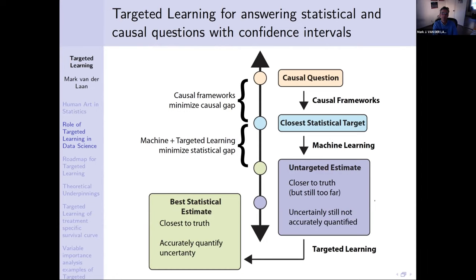Statisticians have thought about this and came up with assumptions such as coarsening at random, missing at random, and the sequential randomization assumption. That gives us fundamental theorems which say: for this type of experiment with the following complexities, I can learn this kind of causal question under the following assumptions. If you apply that result, you obtain a so-called estimand — something you can learn from the data. You now have a causal quantity and an estimand, the closest statistical target. If the identification assumptions are true, these two are equal, and by going after this estimand you're precisely going after the question you care about.